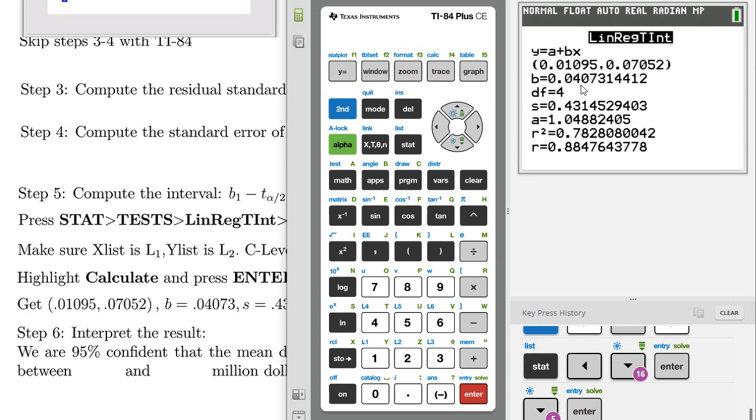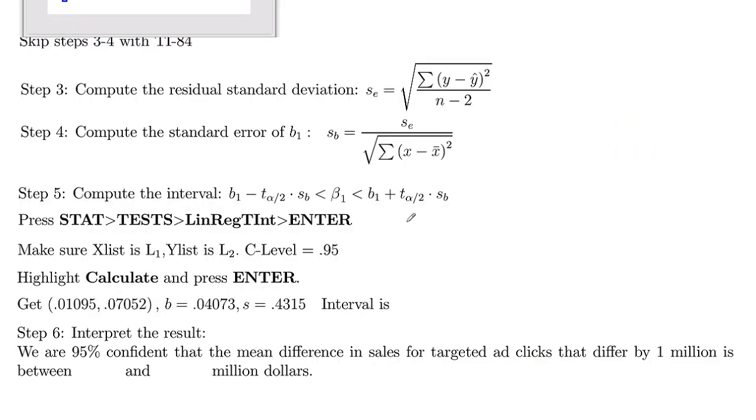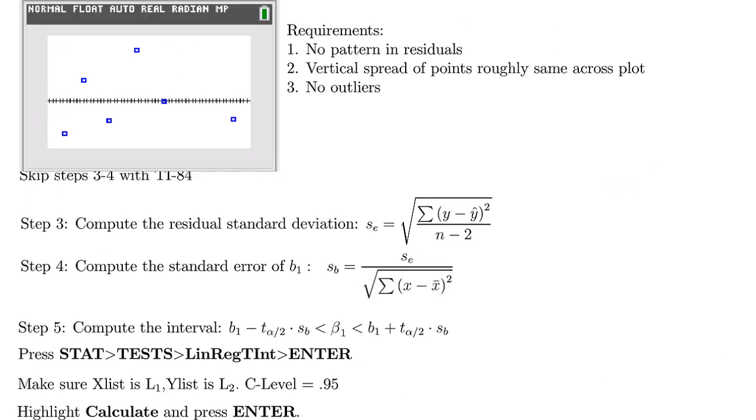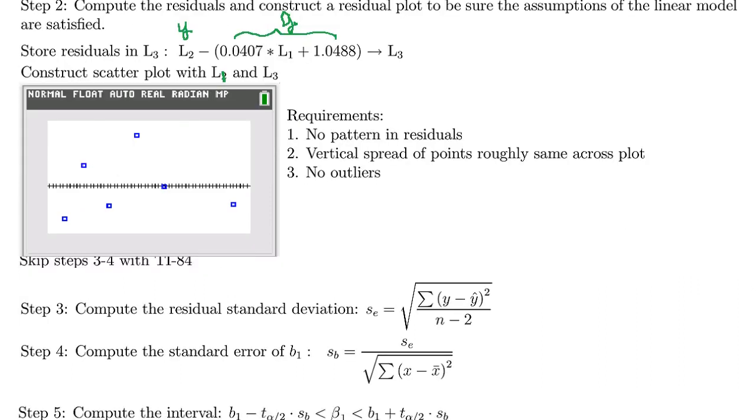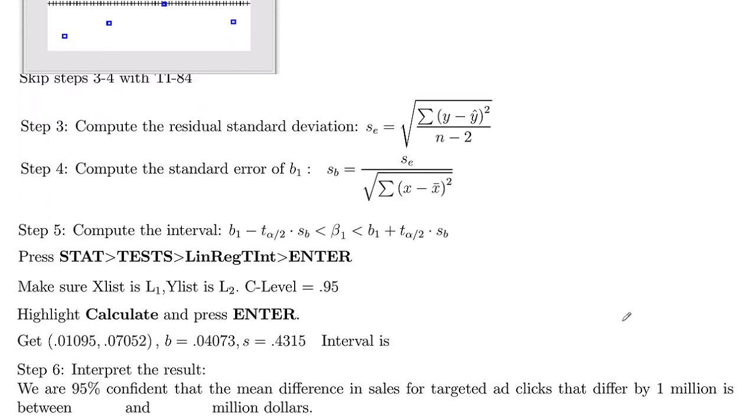Notice the B that it computes, 0.04073. That B is actually right here, 0.0407. So that's our slope. And then S is the standard error here. So it actually computes that for us. So our interval is, we're doing four decimal places, so this would be 0.01095, we'll round up to 0.0110, and less than beta one, less than, and then the upper, this would be 0.0705.